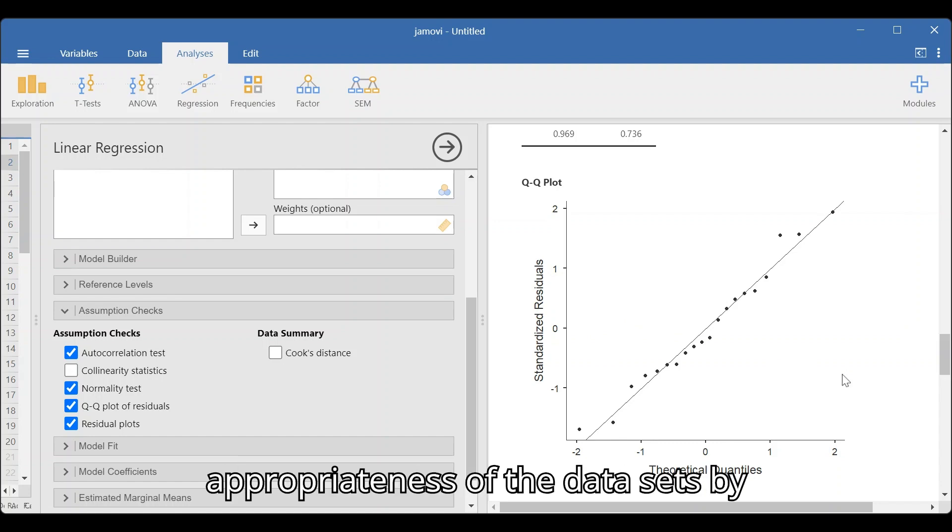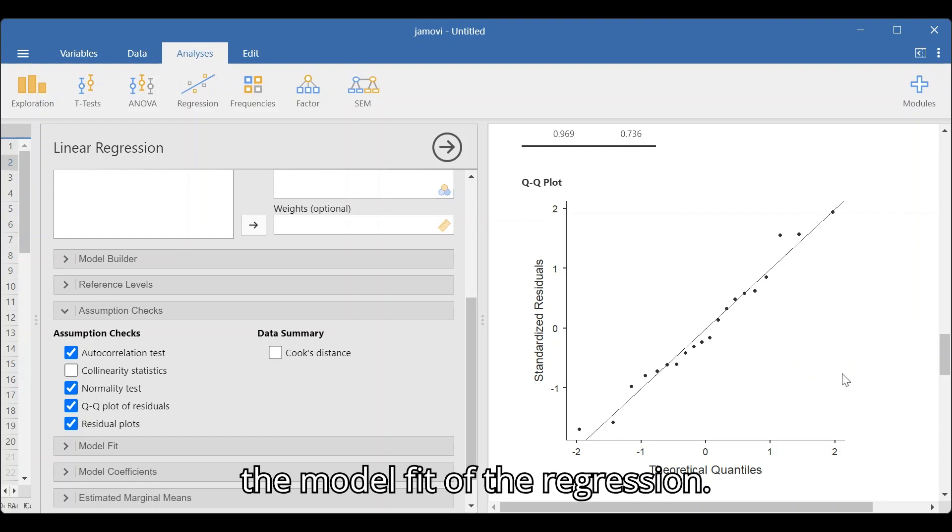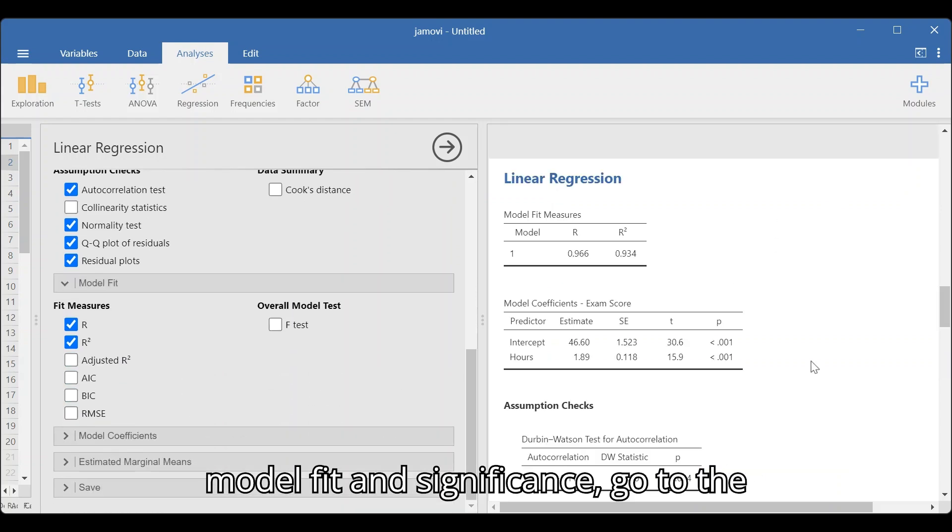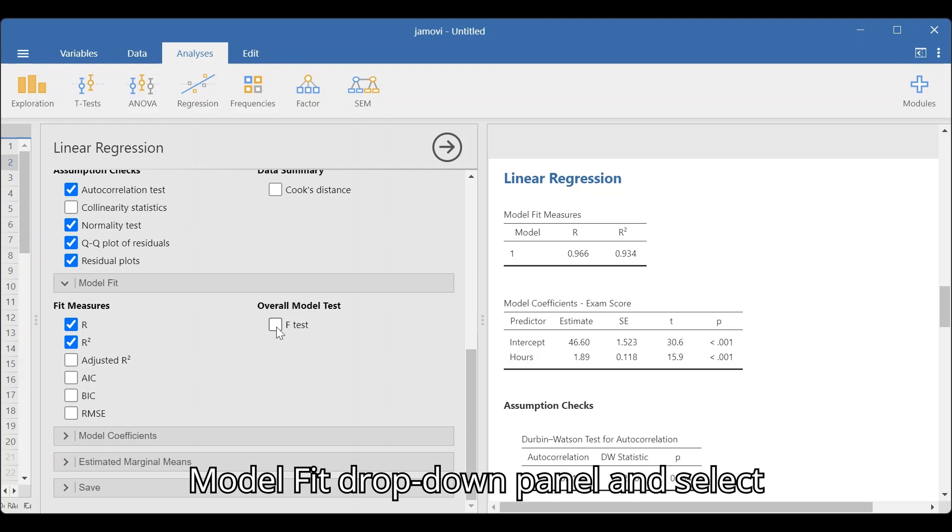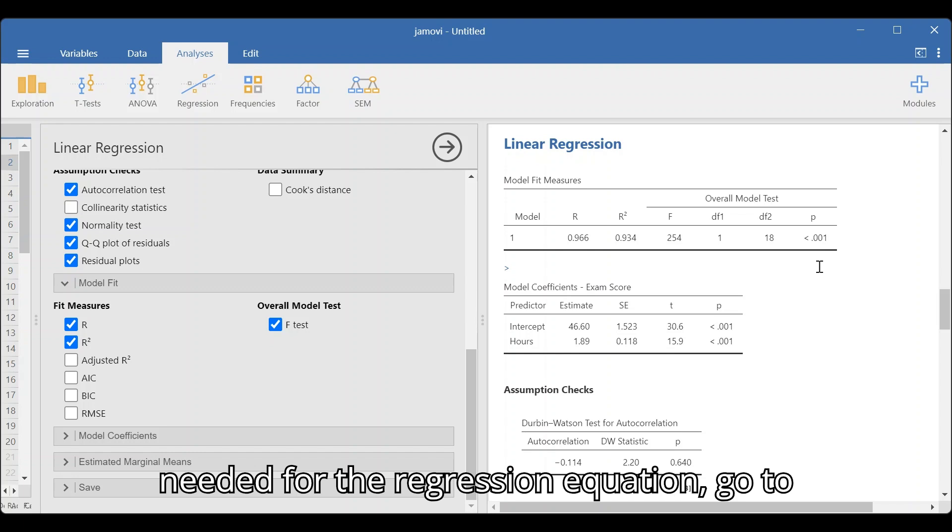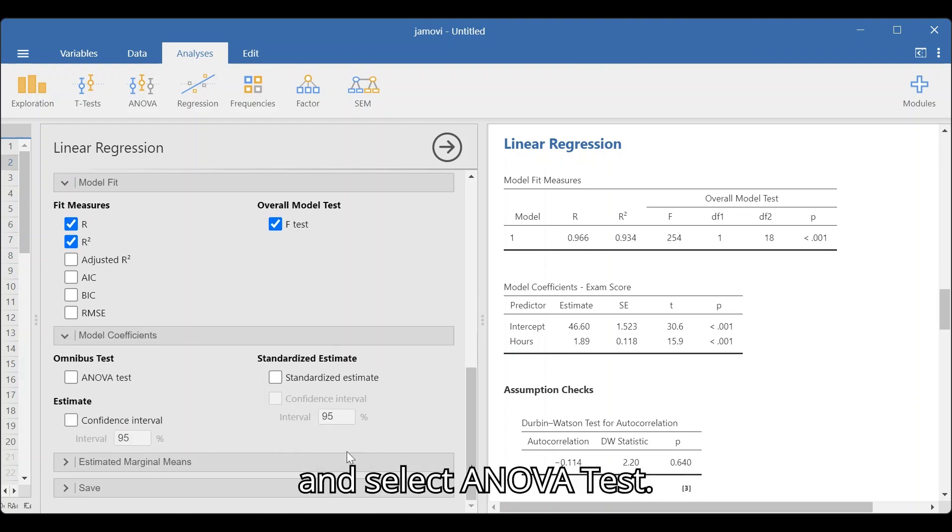Now that we have established the appropriateness of the data sets by checking the assumptions, we can now run the model fit of the regression. To generate the needed tables for the model fit and significance, go to the Model Fit drop-down panel and select F-Test. To load the coefficients needed for the regression equation, go to the Model Coefficients drop-down panel and select ANOVA Test.